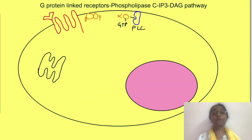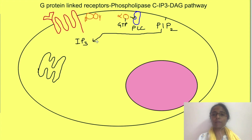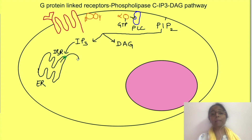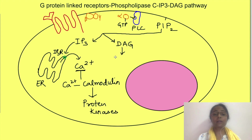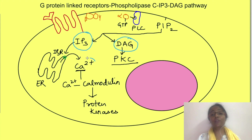When phospholipase C is activated by GQ proteins, it causes breakdown of the membrane phospholipid phosphatidylinositol-4,5-bisphosphate into IP3 (inositol triphosphate) and diacylglycerol. IP3 acts on IP3 receptors present on the endoplasmic reticulum — this receptor is itself a ligand-gated calcium channel. When IP3 binds, it opens the channel, releasing calcium ions from the ER into the cytosol. Calcium ions bind with calmodulin, causing activation or inhibition of calmodulin-dependent protein kinases. Diacylglycerol activates protein kinase C, which phosphorylates other proteins. So in this pathway, IP3, diacylglycerol, and calcium are all second messengers.